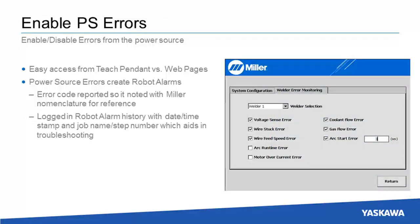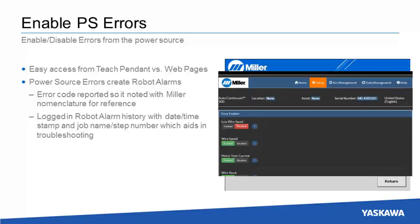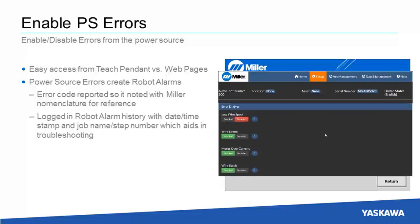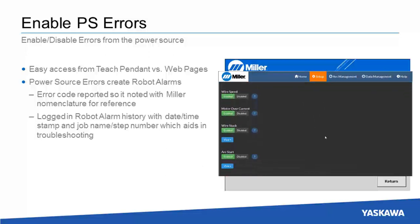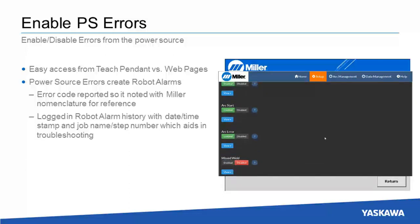Other global settings include the activation of errors from the power source. Some may be more effective for different applications or require additional hardware. Setting is more convenient than web pages, and power source errors are coded with description and recorded in alarm history.